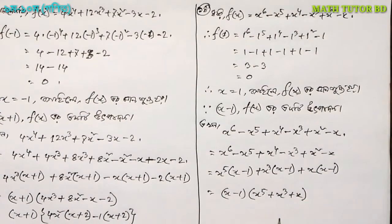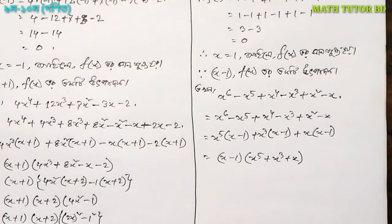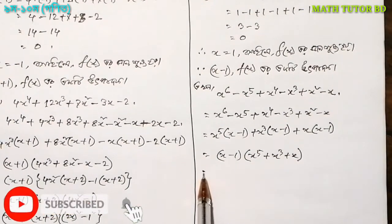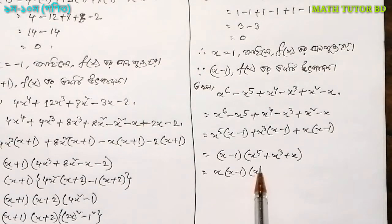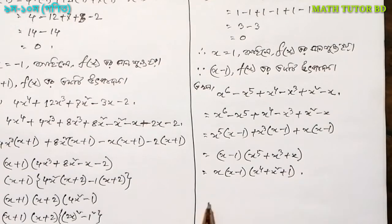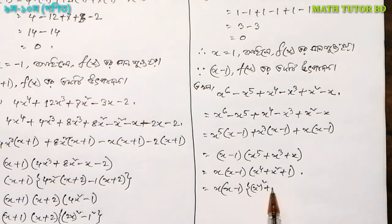Let's take a look at this. If you want to take a look at this — x minus 1 — then x to the power 4 plus x squared plus 1. If you want to take a look at this, x into x minus 1. x squared whole square.